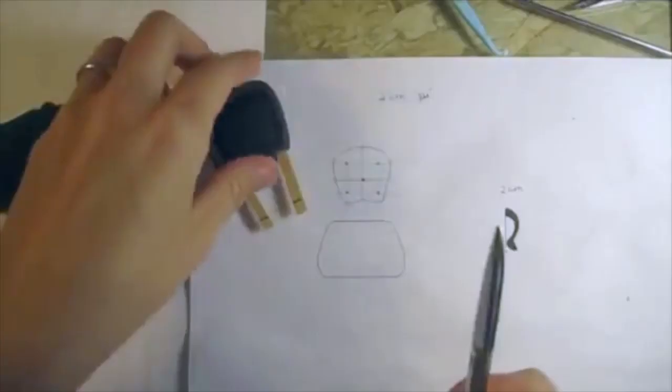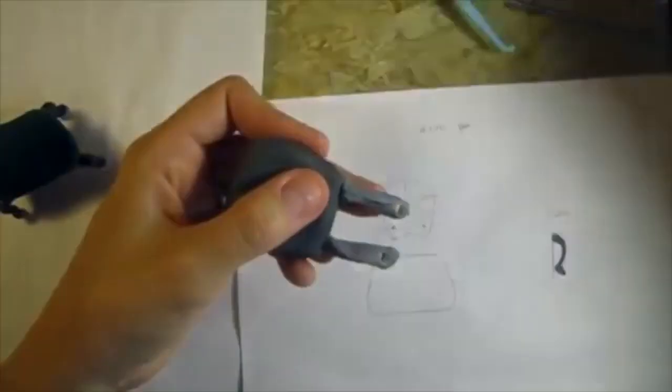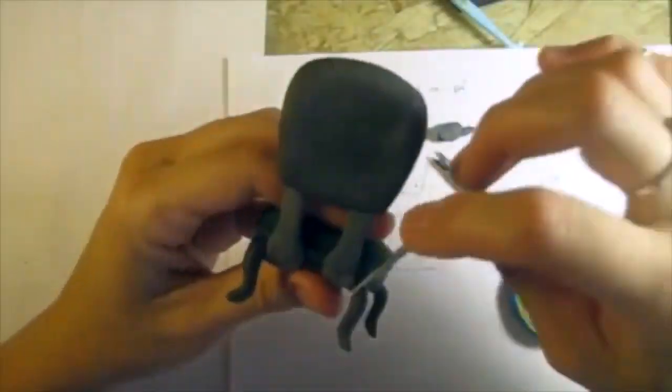Cut the sticks according to the back height. Cover and shape the sticks with clay. Glue the back to the seat, smoothen it out and let it dry.